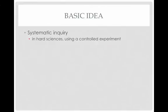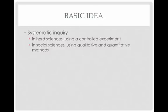Here's the basic idea. You have systematic inquiry. Academic research requires, for example, in the hard sciences that you use a controlled experiment, and in social sciences that you use validated qualitative and quantitative methods. This kind of inquiry is different from a journalistic inquiry, where a journalist might go around and ask people questions and then write up what they seem to see. That's considered anecdotal — it doesn't really tell us systematically about what's going on in the world.